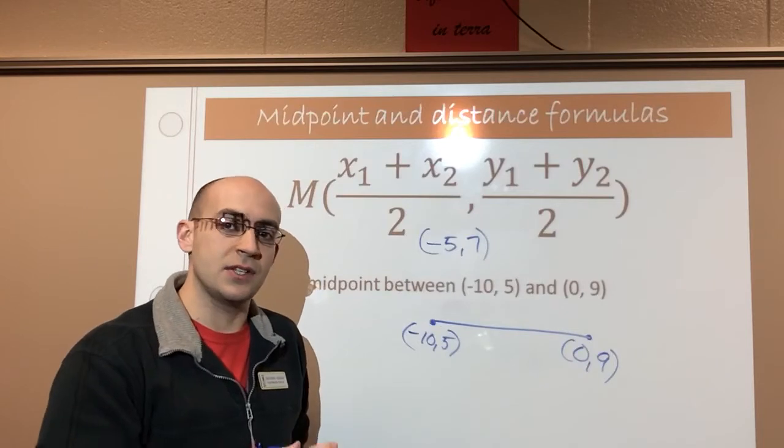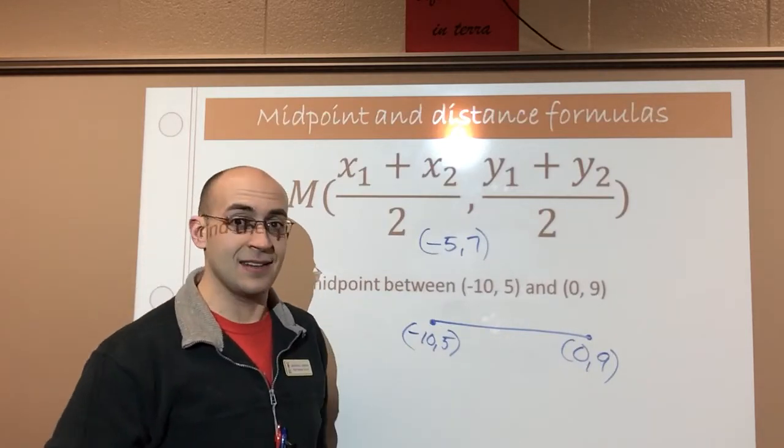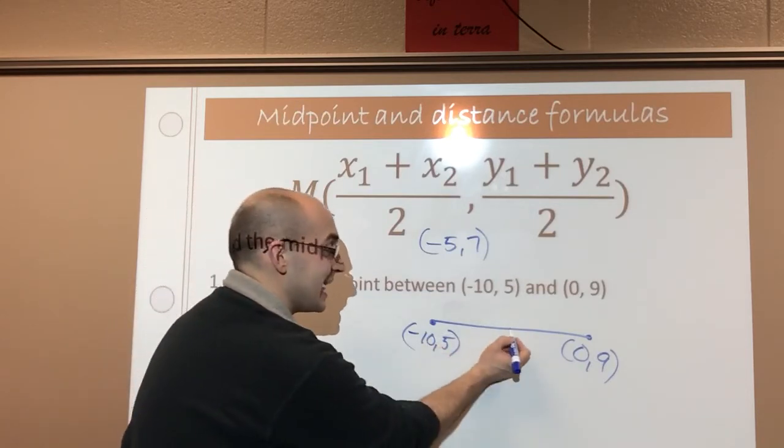I can just easily count and see what the midpoint is going to be. So I know to get from negative 10 to 0, that's 10 units. And half of that, or halfway through, is going to get me at the point negative 5.